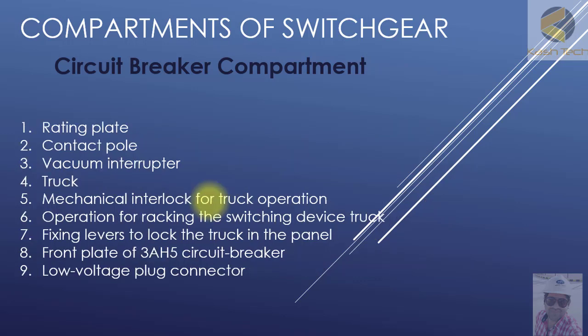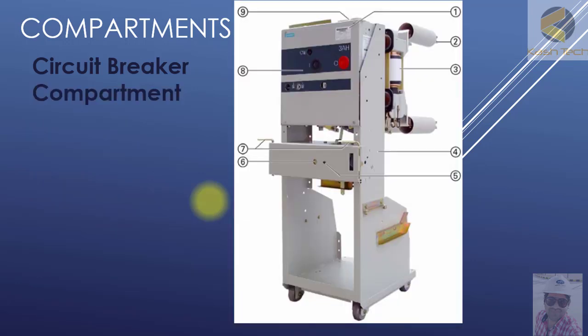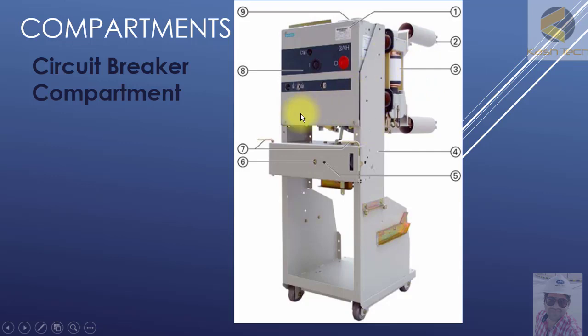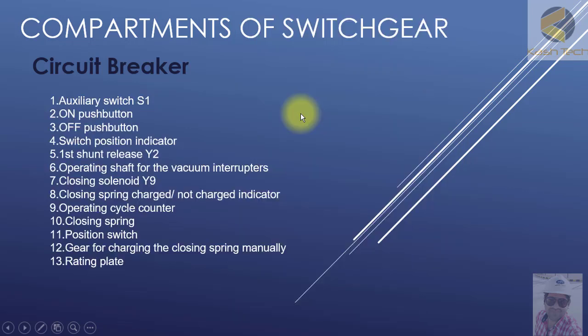In the circuit breaker compartment section, I will be explaining the grating plate, contact plug pole, and similar components. I will also introduce the circuit breaker trolley, which is inserted into the compartment, and we will see in detail the different components of the compartment and the circuit breaker itself.